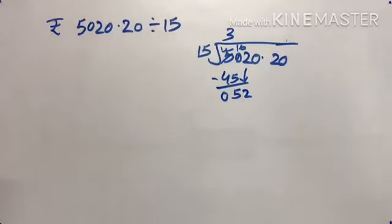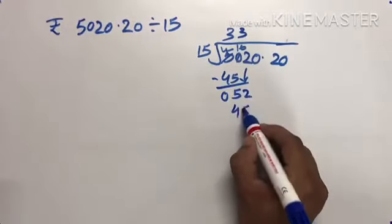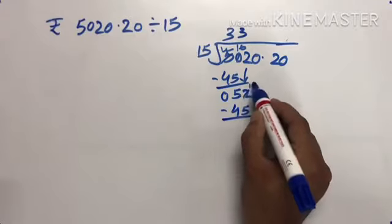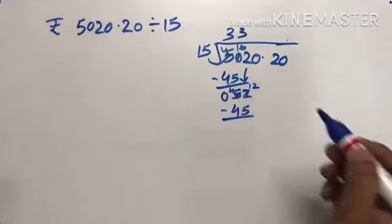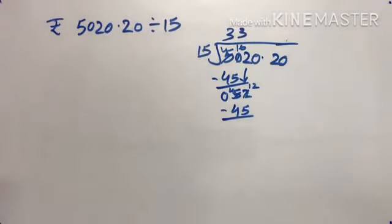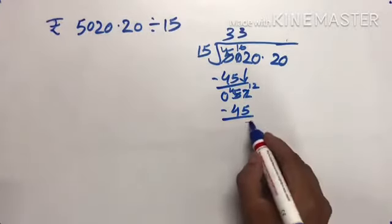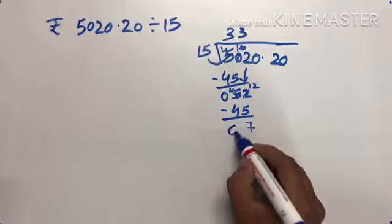52 divided by 15. 15 times 3 is 45. 52 minus 45 is 7. 12 minus 5 is 7, 4 minus 4 is 0.